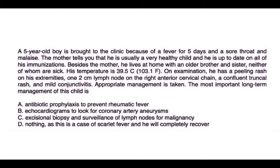Lastly, a clinical question. A five-year-old boy is brought to the clinic with a fever for five days, sore throat, and malaise. He is a healthy child, up to date on immunizations, and lives with an older brother and sister who are not sick. His temperature is 39.5 degrees. On examination, he has a peeling rash on his extremities, a two-centimetre lymph node on the right anterior cervical chain, a confluent truncal rash, and mild conjunctivitis. He has a fever and four of the five criteria, confirming a diagnosis of Kawasaki disease.